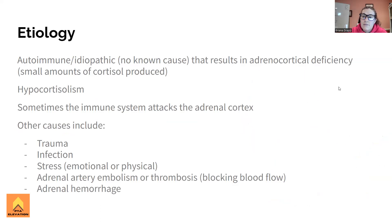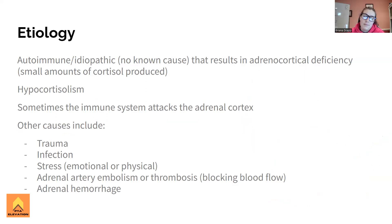So what is the etiology? A lot of times it's going to be autoimmune or idiopathic. This does have an autoimmune component, which means the body just starts saying it's not going to produce cortisol. Or it could be idiopathic - it just shows up randomly with no known cause. This will result in adrenal cortical deficiency, a fancy way of saying the adrenal glands are not producing enough cortisol, so small amounts of cortisol are being produced.